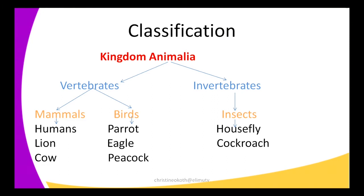All these are vertebrates, but we still subdivide them. There are those which are mammals — they have mammary glands, they feed their young ones, and they reproduce. Under mammals I have humans, lions, and cows. Then under the second group I have birds: parrot, eagle, and peacock. The structures and way of life of these organisms make them to be classified under birds.